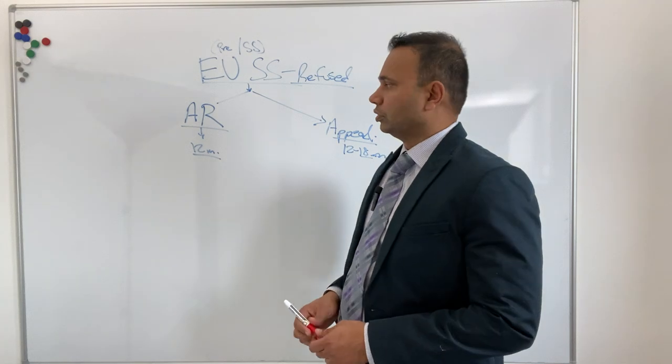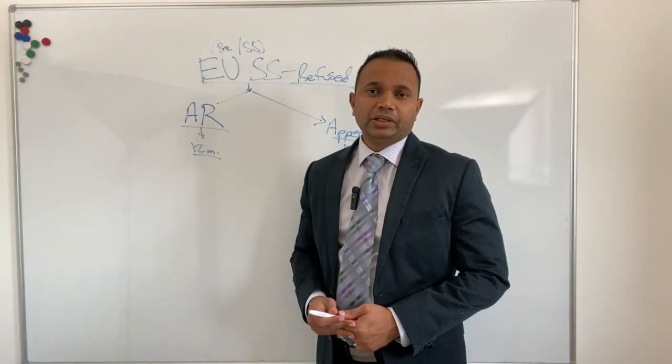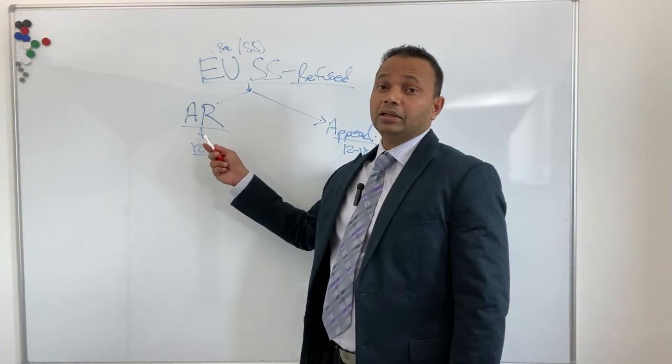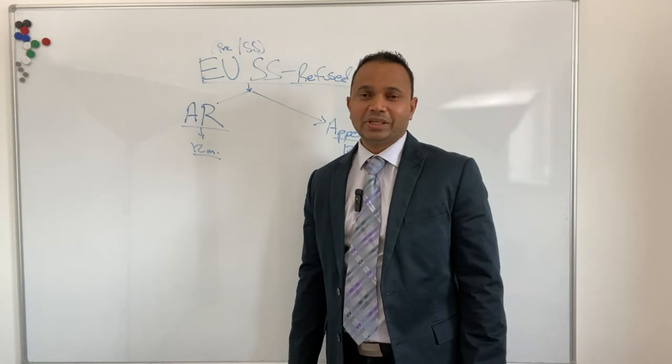If it's refused, what should you do - administrative review or appeal? You have both options. You can go straight for AR and wait for it. It takes about 12 months to decide an AR approximately, that is the waiting time as of today.